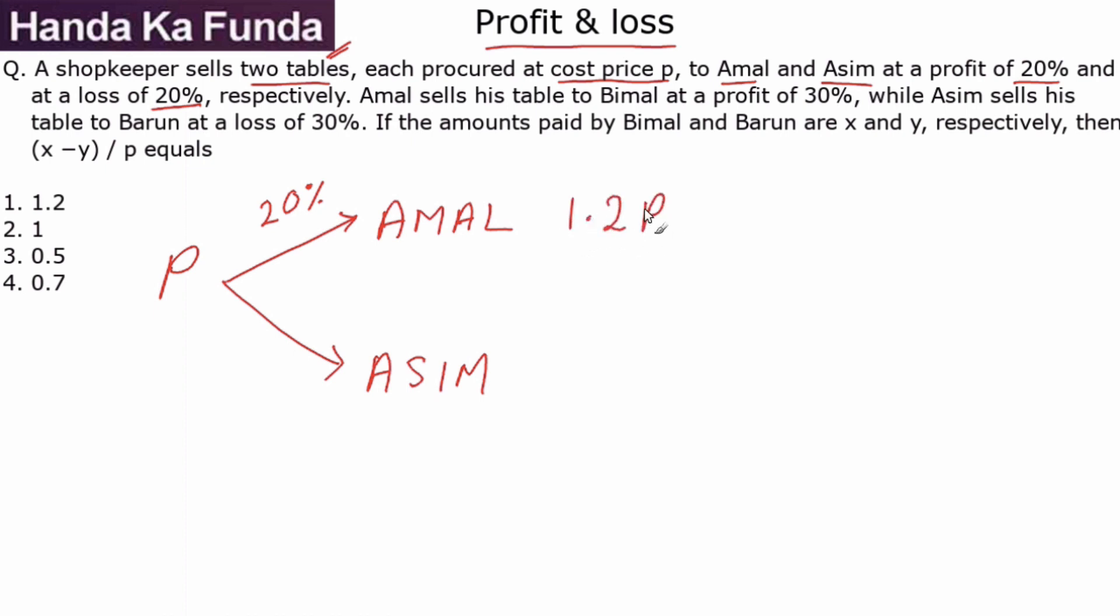A 20% profit means it was sold to Amal at 1.2 times the original cost price, or 1.2p. Very similarly, it was sold at a 20% loss to Asim. A 20% loss on p is a loss of 0.2p, so p minus 0.2p gives 0.8p. That's the price at which it was sold to Asim.